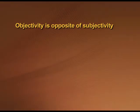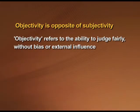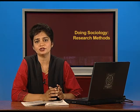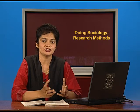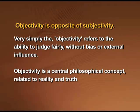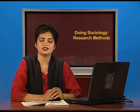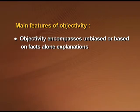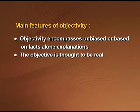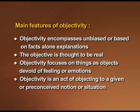Objectivity is the opposite of subjectivity. In very simple terms, objectivity refers to the ability to judge fairly without bias or external influence. It means the state or quality of being true even outside a subject's individual feelings, imaginations or interpretation. Objectivity is the central philosophical concept related to reality and truth, and we strive to achieve it through the process of research. As contrast to subjectivity, objectivity encompasses an unbiased perspective and is based on facts alone. The objective is thought to be real; it focuses on things as objects, devoid of feeling or emotions, and is an act of objecting to a given or preconceived notion in one's mind.